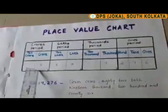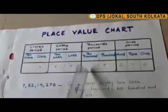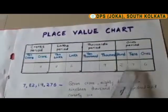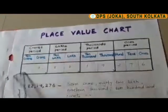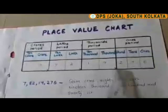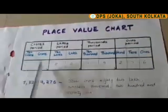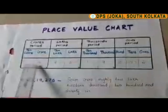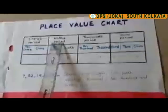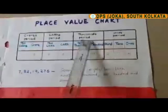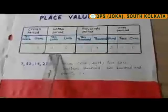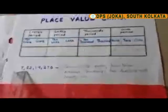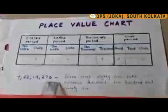Now let us take this number: 7,82,19,276. We read it like this — seven crores, eighty-two lakhs, nineteen thousand, two hundred and seventy-six. So this is how we read the number.